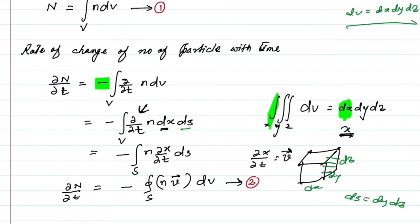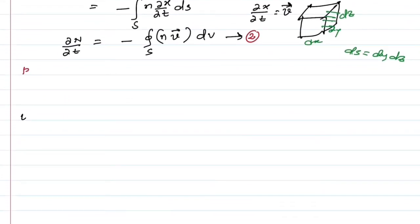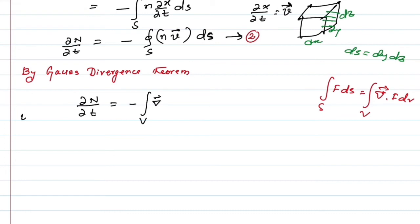Now let us apply the Gauss divergence theorem. By the Gauss divergence theorem, the surface integral of F dot ds equals the volume integral of the divergence of F dv. Applying this, we get del N del t equals minus the volume integral of the divergence of (n times u) dv. Let this be equation number three.